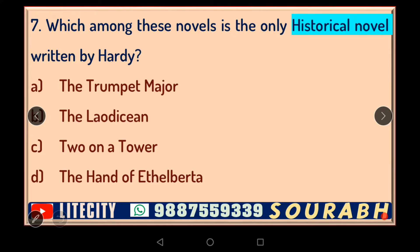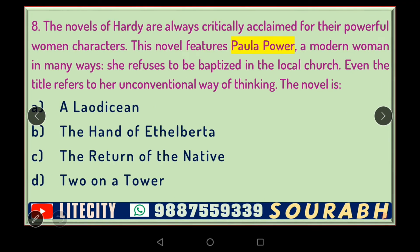Moving to our next question: which among these novels is the only historical novel written by Hardy? There was a vogue for writing historical novels at that time — Dickens tried 'Barnaby Rudge' and 'A Tale of Two Cities,' and Thackeray also wrote in a similar fashion. Hardy also tried his hand. The options are 'The Trumpet Major,' 'A Laodicean,' 'Two on a Tower,' and 'The Hand of Ethelberta.' The answer is 'The Trumpet Major,' set against the background of the Napoleonic Wars.